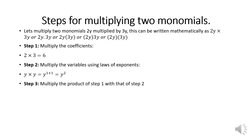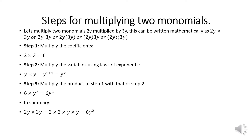So it's going to be y to the power of 1 plus 1, which is y squared. Step 3: multiply the products of step 1 with that of step 2. You take the 6 and multiply it by y squared, giving you a final answer of 6y squared. In summary: 2y multiplied by 3y gives you 2 × 3 × y × y, which equals 6y squared.